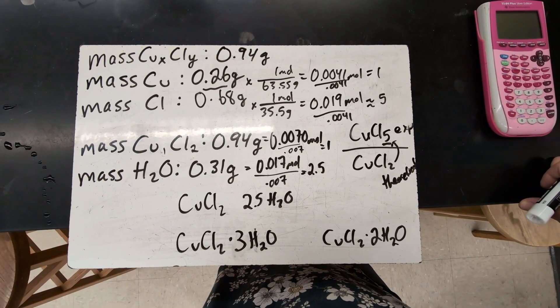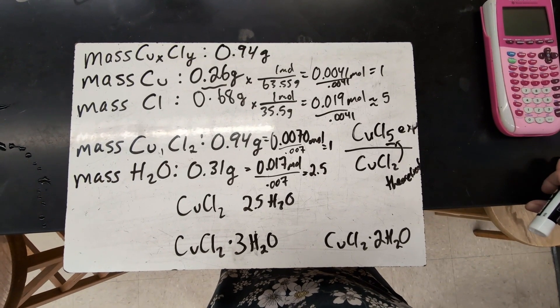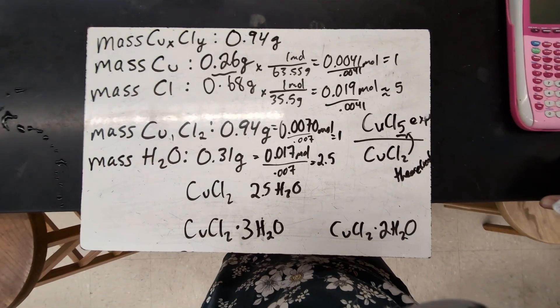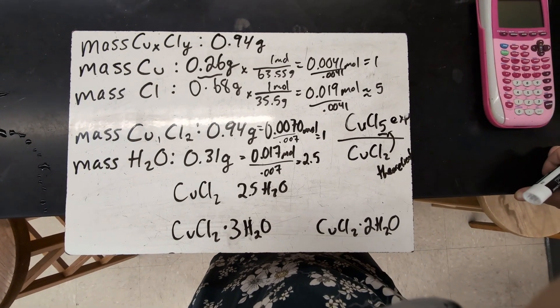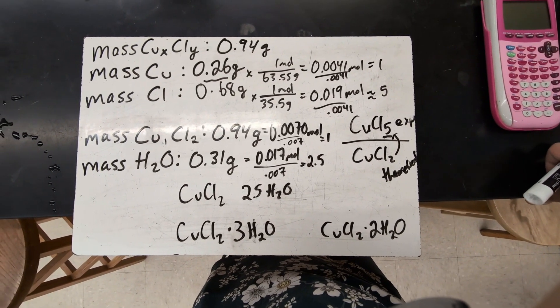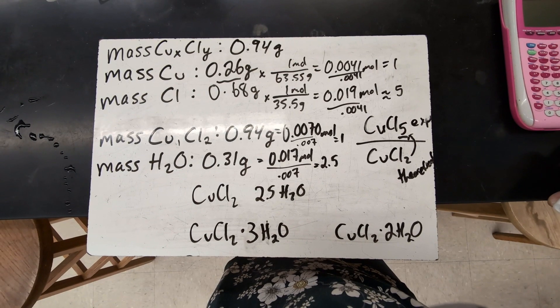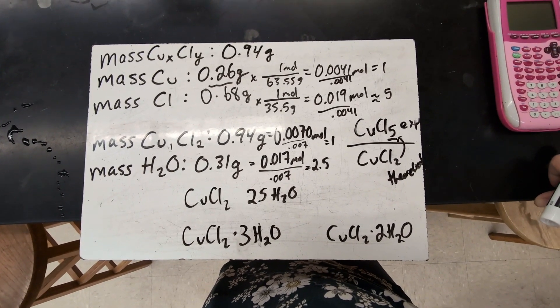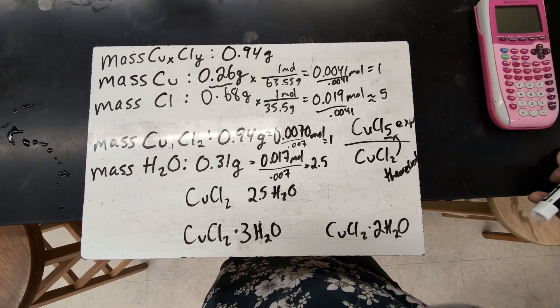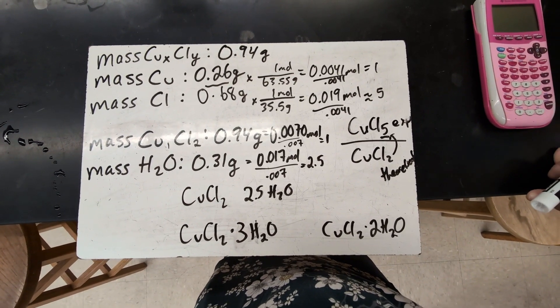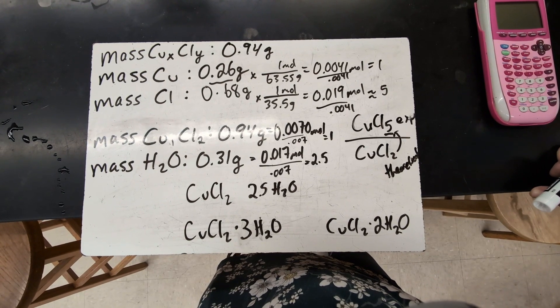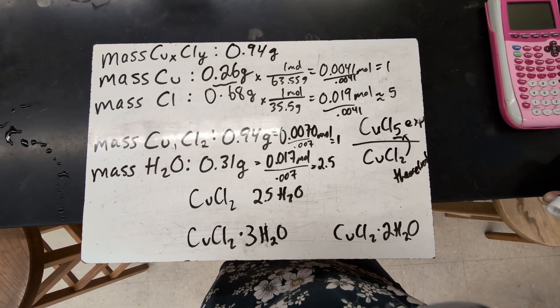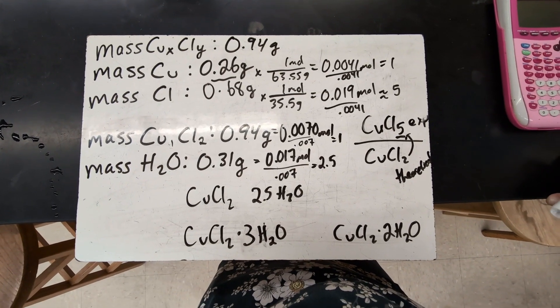This lab fits pretty well with unit four because it involves that single replacement reaction. Although you could absolutely do it with unit one because for the most part it covers just empirical formula concepts. And it is a good one for looking at a lot of different experimental sources of error and how the error affects your final calculations for each of those things. So there's a good bang for your buck with this lab. There's a lot of good learning that can go on with this one experiment.